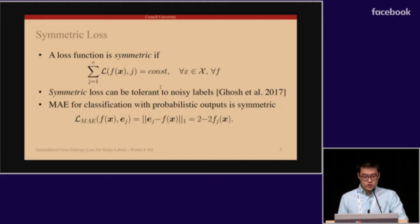As a background introduction, a loss function is symmetric if the sum of losses with respect to all ground-truth-labeled classes is a constant. It was previously shown that symmetric loss can be tolerant to noisy labels.